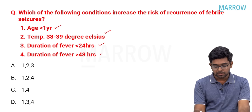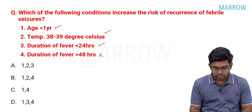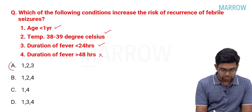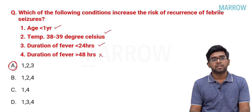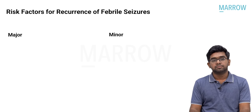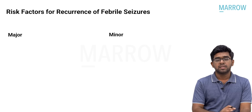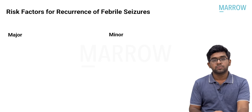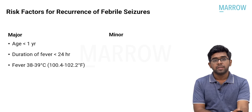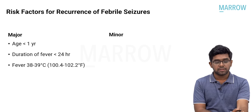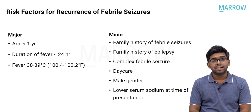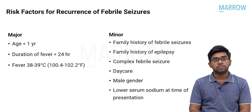The option 'duration of fever more than 48 hours' is not a risk factor. So options 1, 2 and 3 — age less than 1 year, duration of fever less than 24 hours, and fever of 38 to 39 degrees centigrade — are the major risk factors, fitting with option A as the answer. Minor risk factors include family history of seizures or epilepsy, complex febrile seizure, a child in daycare, male gender, and low serum sodium at the time of presentation.